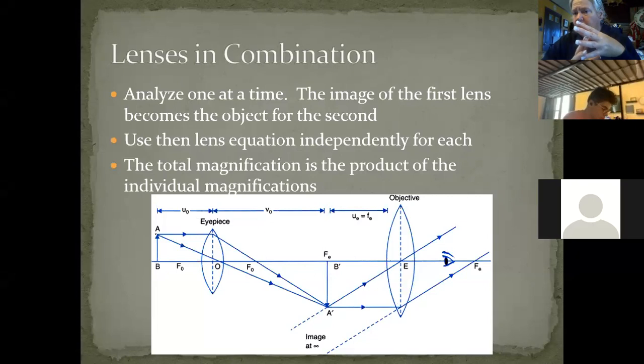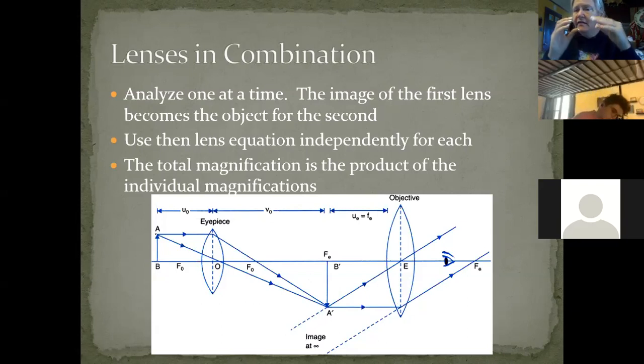I showed you how to ray trace for a multiple lens system last time. This ray trace is essentially for a compound microscope. The way most microscopes or telescopes work that you're using with an eyepiece is the eyepiece will always act as a magnifier. The eyepiece where you put your eye is a converging lens, but remember if you have the object inside the converging lens, then that forms a virtual enlarged upright image.